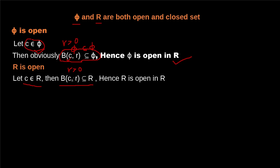So we can see that for any element C belonging to ℝ, we can always find an open ball with center C and radius R which lies entirely in this set. This proves that point C is an interior point of ℝ, and so we can say that the set ℝ is open in ℝ.